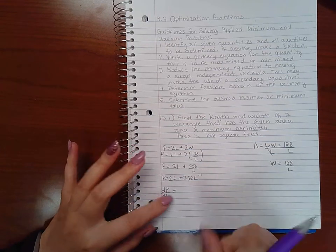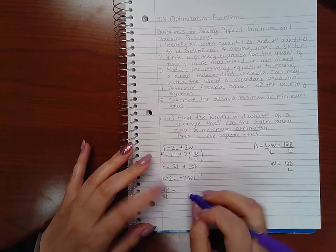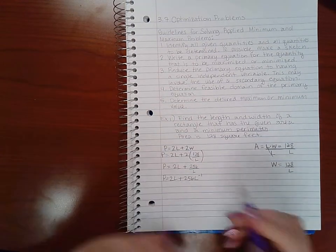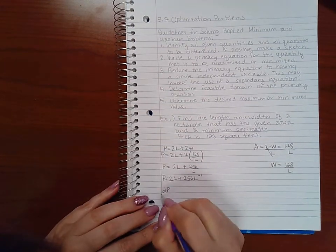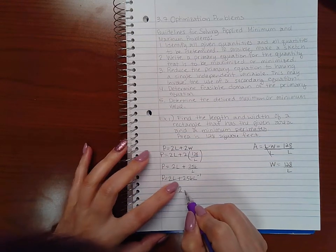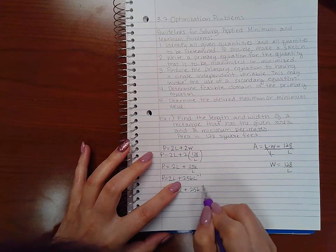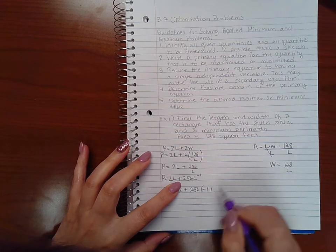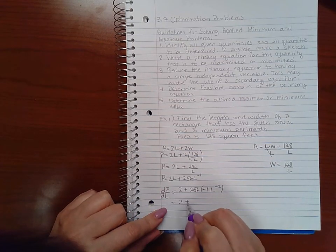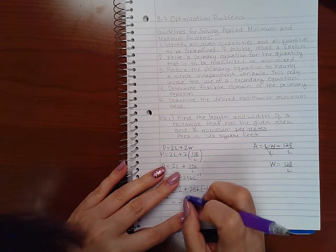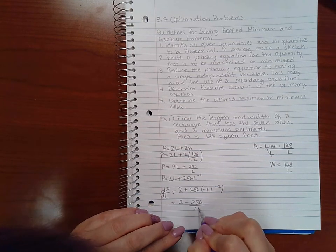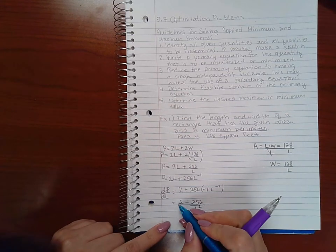So the derivative of P with respect to L is going to be 2 plus 256 times negative 1 L to the negative 2, which means I get 2 minus 256 over L squared.